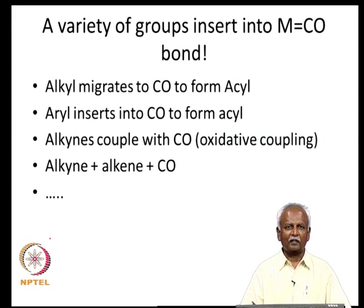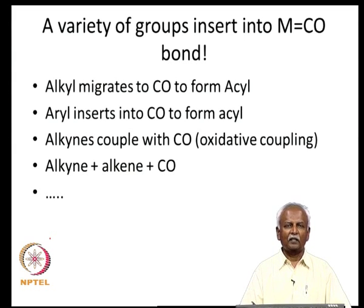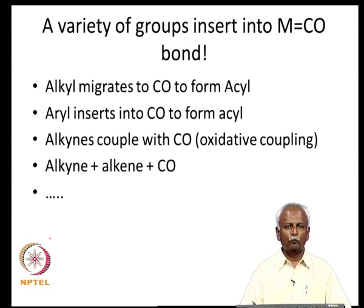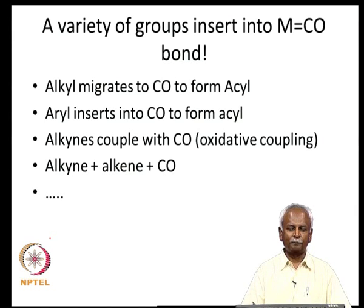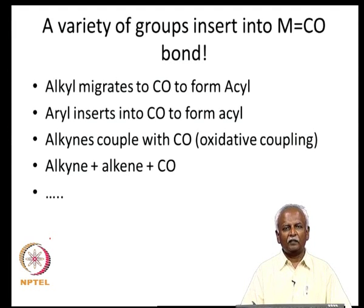If you look at the chemistry that has been developed, you will realize that carbon monoxide has an extensive chemistry that includes alkyl groups, aryl groups, alkynes, alkenes, and a combination of all of these groups to form useful materials. In all of these reactions, carbon monoxide is activated and it is made possible for a reaction between the unreactive carbon monoxide, which is now coordinated to the metal, and an alkyl, aryl, vinyl, or allyl group.